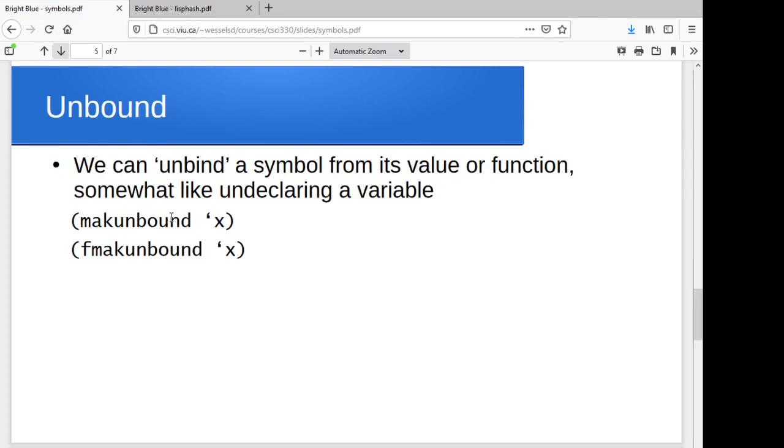We can unbind a symbol. If you've declared this variable x, for instance, and I no longer want it to be bound to whatever it was bound to, you can actually make it unbound. Similarly with functions, if you've got some function that you've declared and you want to make it unbound, kind of like undeclaring the beastie.